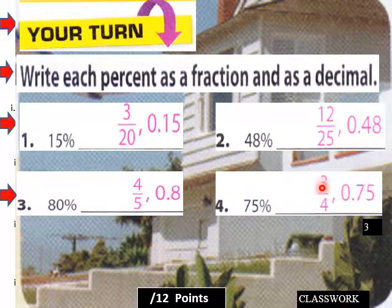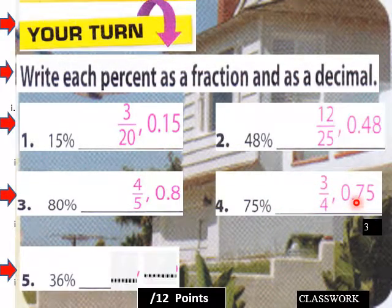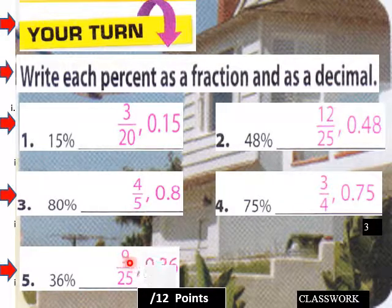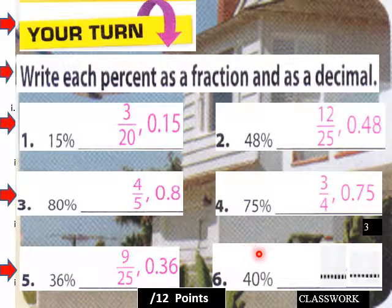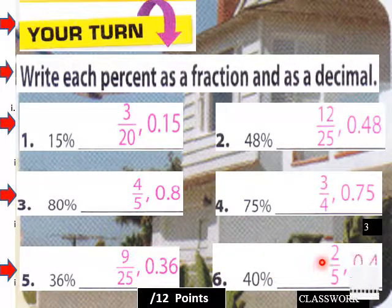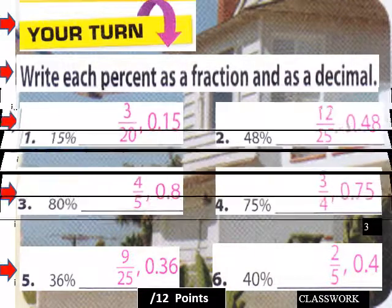And then 36% would be 9 over 25, or 0.36. And then 40% as a fraction would be 4 tenths or two fifths, and 0.4 as a decimal.